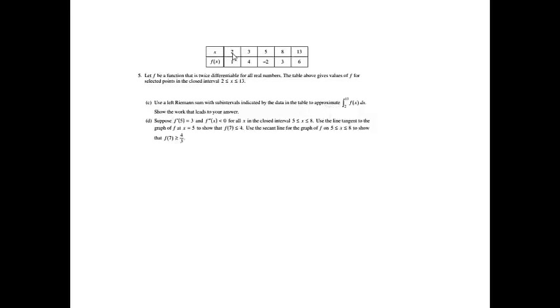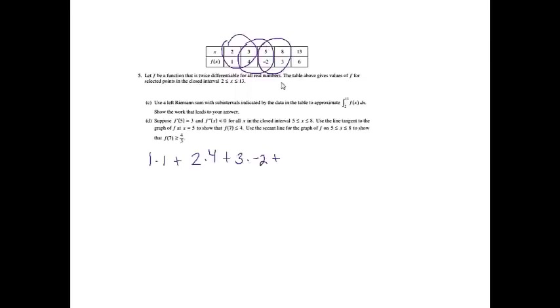Left Riemann sum — I notice we're not going by equal intervals, so I have to do each part separately. From 2 to 3, the distance is 1 and the left endpoint value is 1. From 3 to 5, the distance is 2 and the left endpoint value is 4. From 5 to 8, the distance is 3 and the left endpoint value is negative 2. From 8 to 13, the distance is 5 and the left endpoint value is 3.